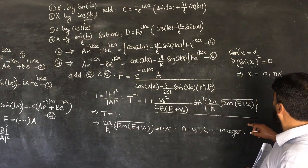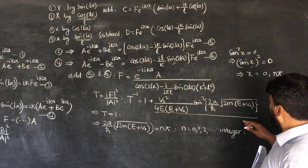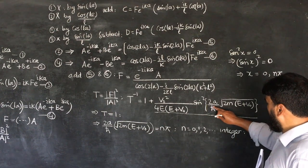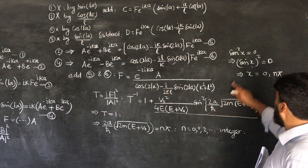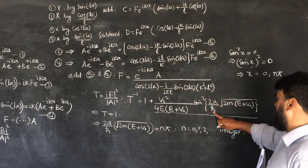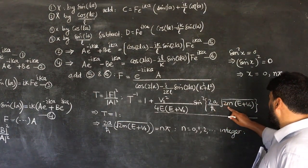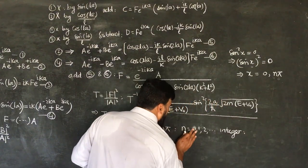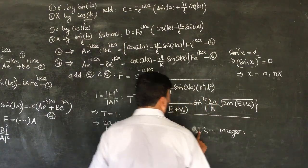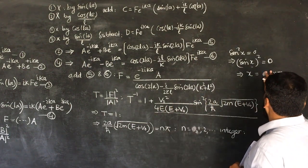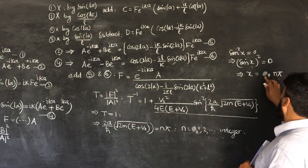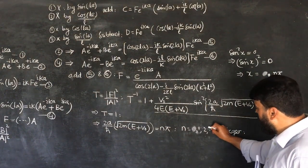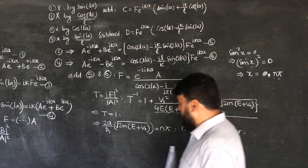Now, can n be 0? No, because all the quantities inside the argument are non-zero. So n takes integer values 1, 2, 3, and so on — we exclude n = 0 — keeping all other integral values.